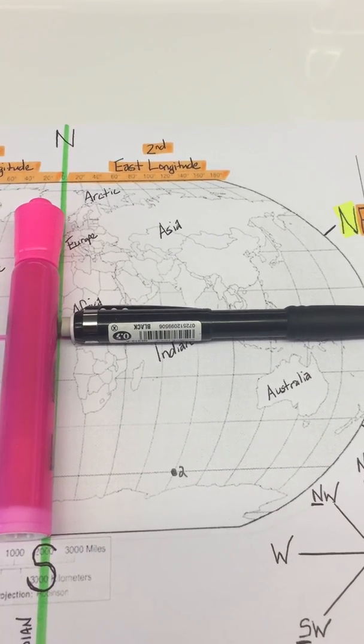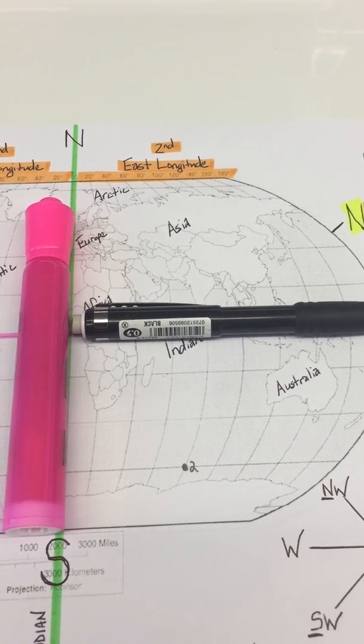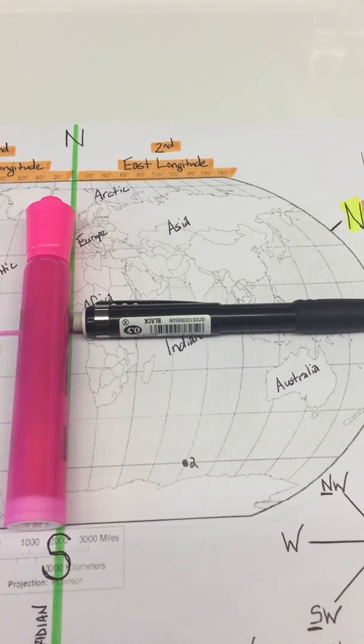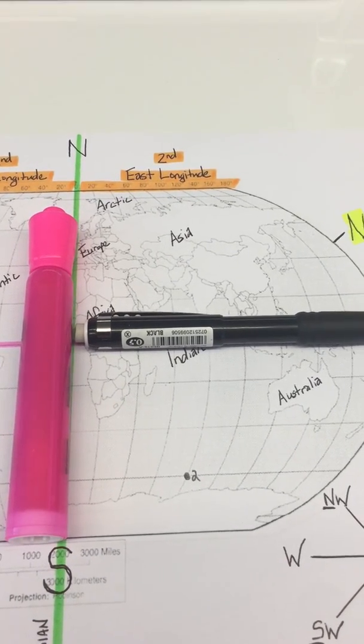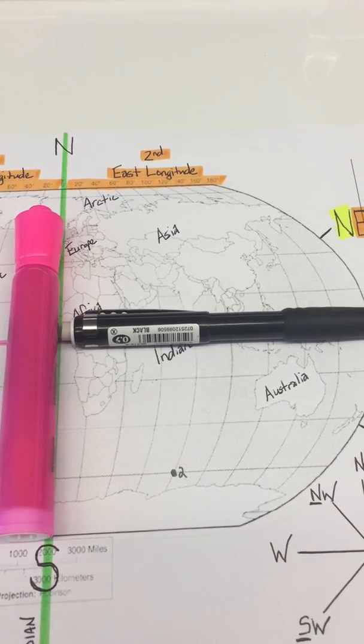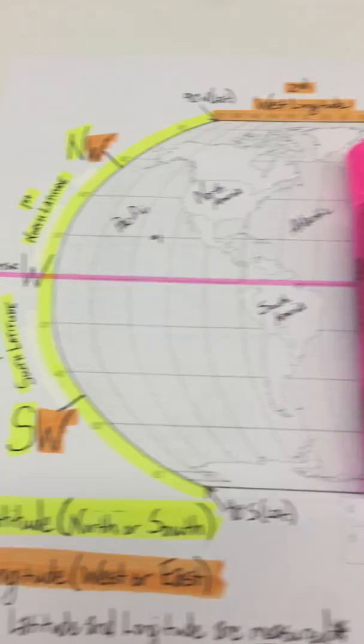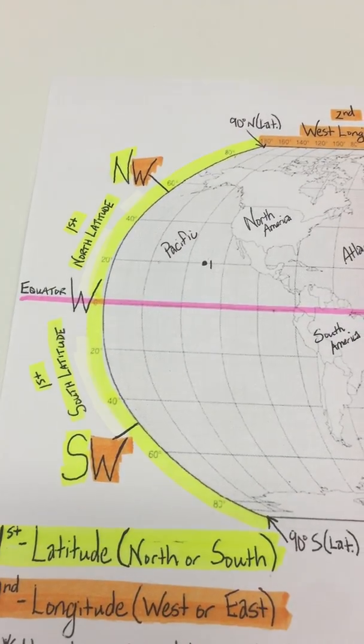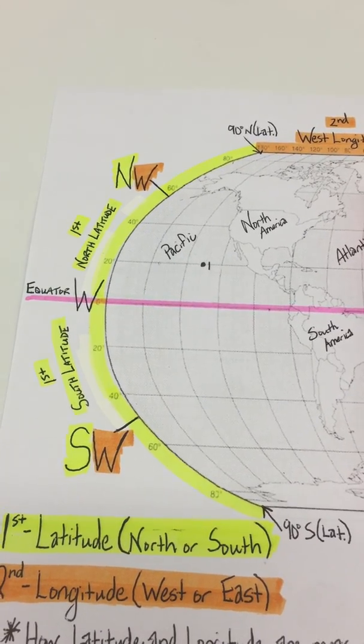So if you're looking at point number two, the other way of finding the latitude and longitude is to look at the directions first. So remember, what always, always, no matter what, will go first? Latitude. And you can only measure latitude either north or south of what? The equator, which is that pink line.